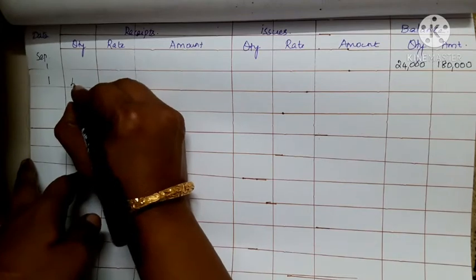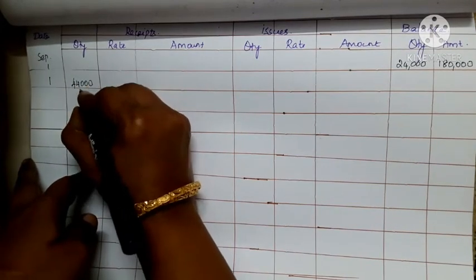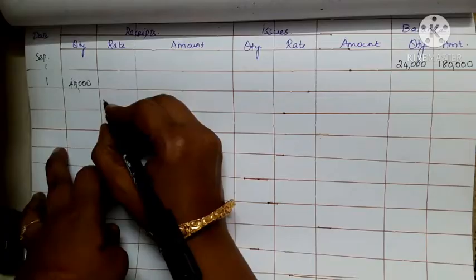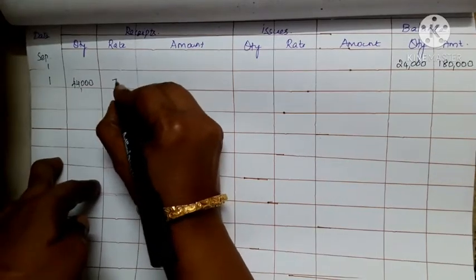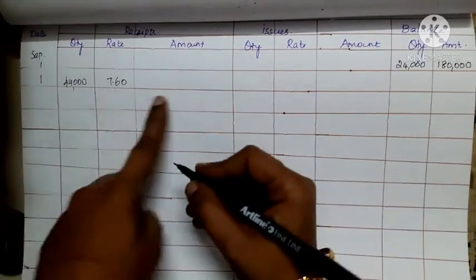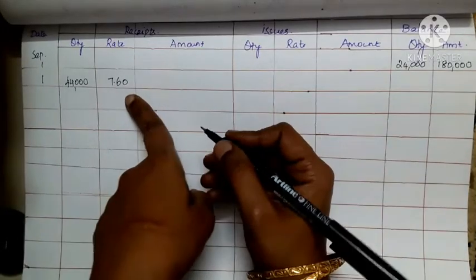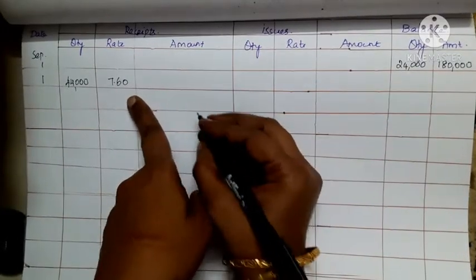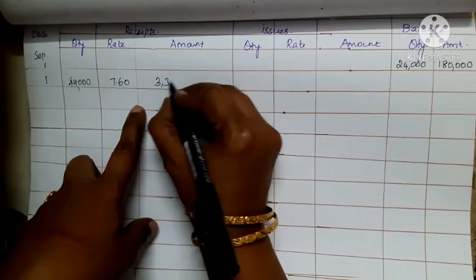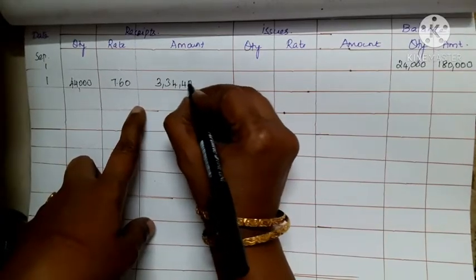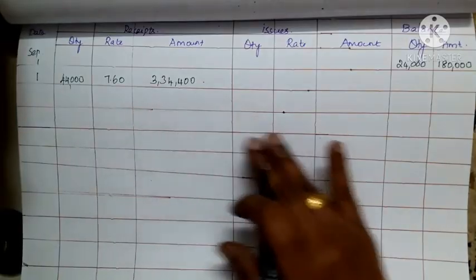The purchase quantity is 44,000. The rate is 7.60, so 44,000 multiplied by 7.60 gives 3,34,400. That completes all receipt entries.